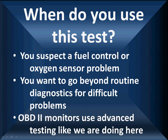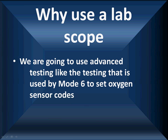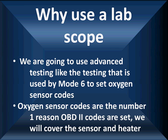Now we're going to cover the OBD2 monitors and the type of testing they do and the results that they get with mode 6. We're going to use the advanced testing like the testing used by mode 6 to set oxygen sensor codes. Oxygen sensor codes are the number one reason OBD2 codes are set according to inspection programs in most of the states. We're going to cover the sensor and the heater.